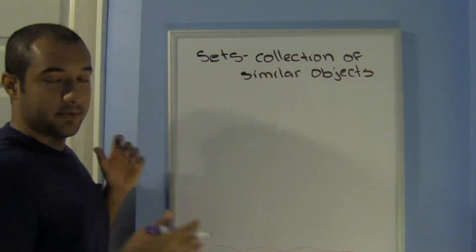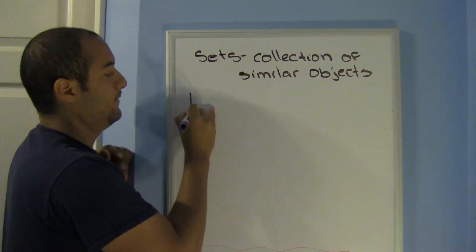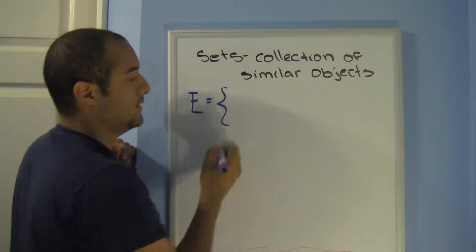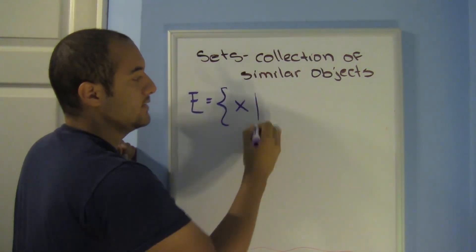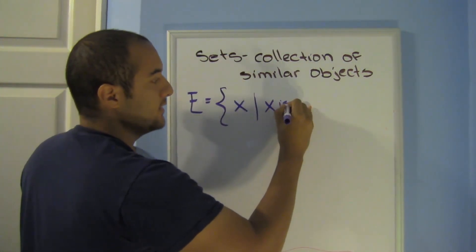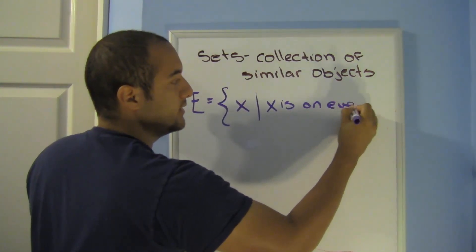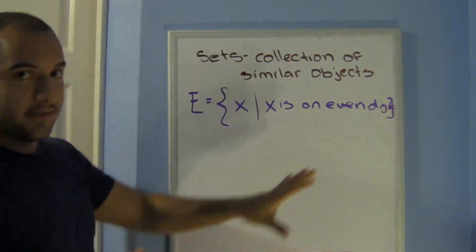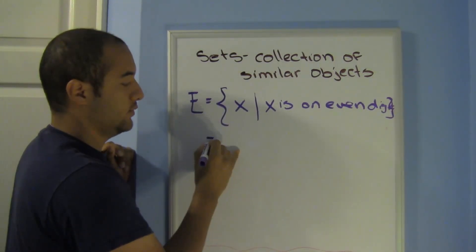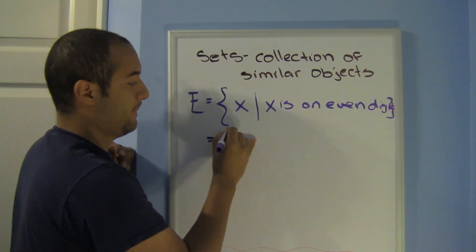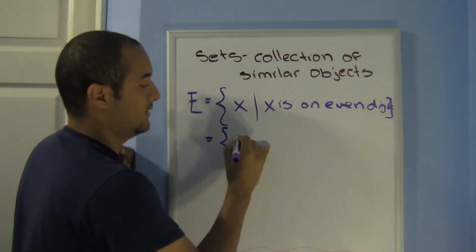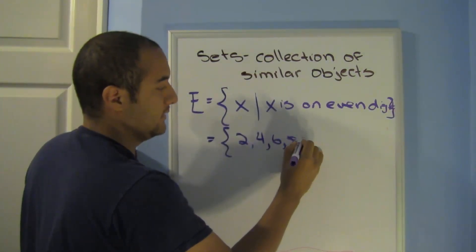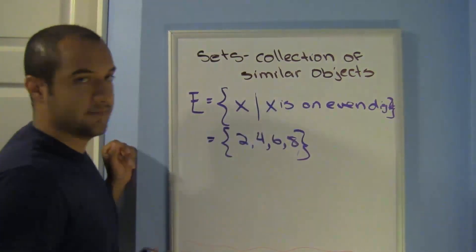Here's one example of how to translate it. We can say the set E is a set X such that X is an even digit. So here, this is what we're saying. If I use roster notation, I can say 2, 4, 6, 8. Those are my even digits.